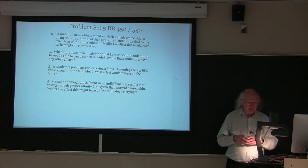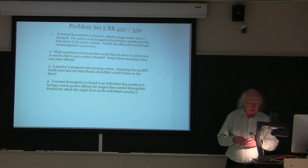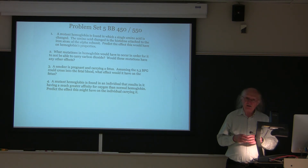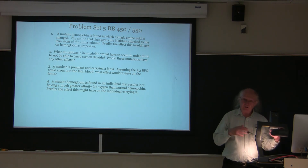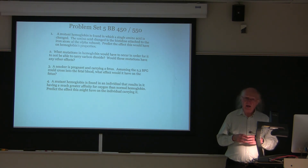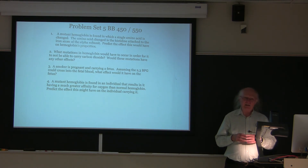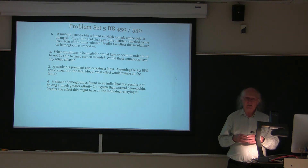Question number two says: what mutations in hemoglobin would have to occur in order for it to not be able to carry carbon dioxide? And would these mutations have any other effects? The binding of carbon dioxide by hemoglobin occurs on histidines — separate from the histidine involved in binding to the iron. The binding of carbon dioxide by the histidine is an important part of the transport of carbon dioxide back to the lungs, away from the tissues that metabolized it.